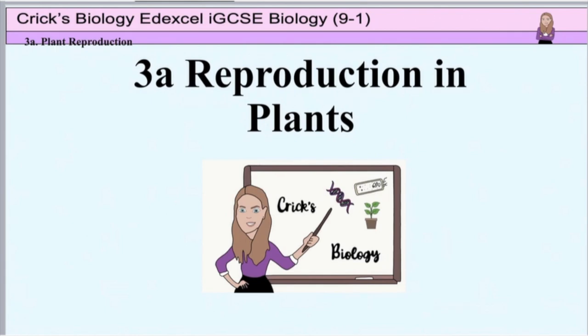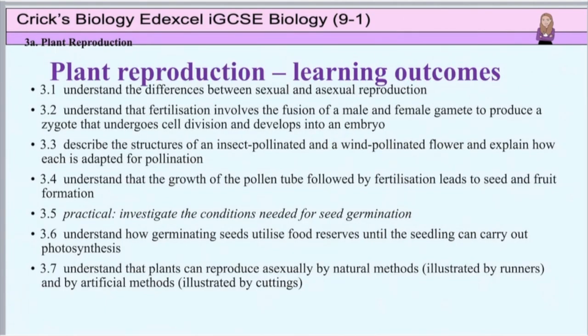Welcome to my lesson on reproduction in plants. In this lesson we are going to compare the types of reproduction plants can carry out and then look at the life cycle of the plant from flower through pollination and fertilization, the formation and distribution of seeds, and finally the germination of the seed and growth of a new plant.